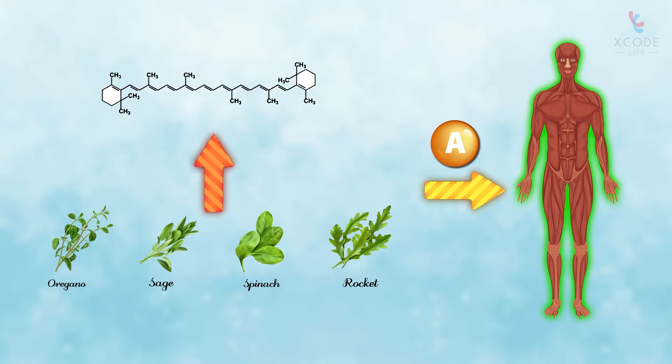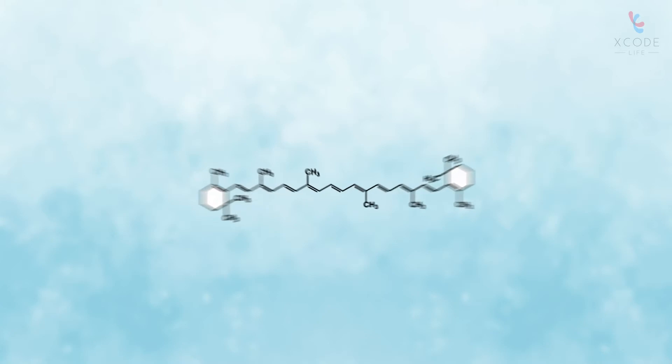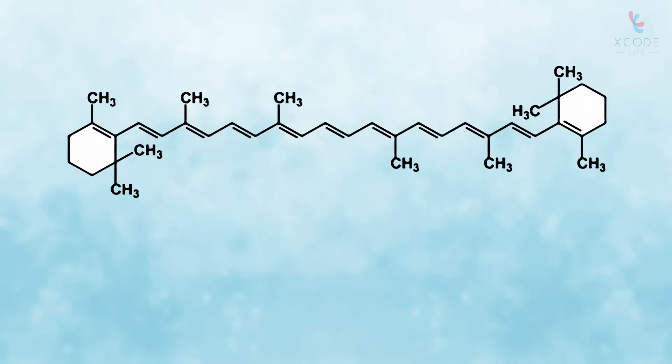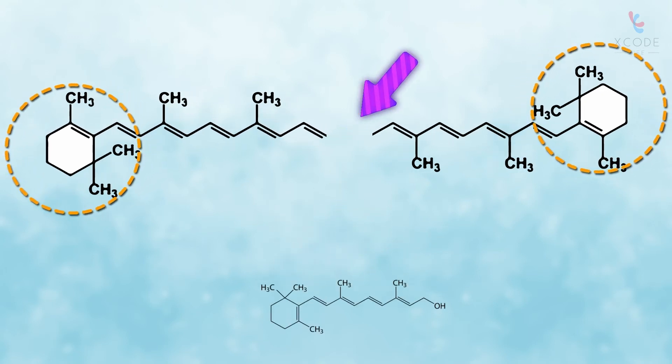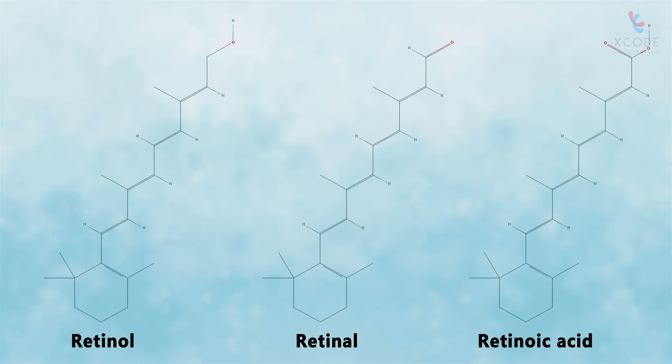Let's see how that happens. The structure of beta-carotene resembles that of a dumbbell: two ring-like structures joined by a chain. This chain is cut in a particular way to give rise to two molecules of retinol, or active vitamin A. This cleavage happens in the liver.